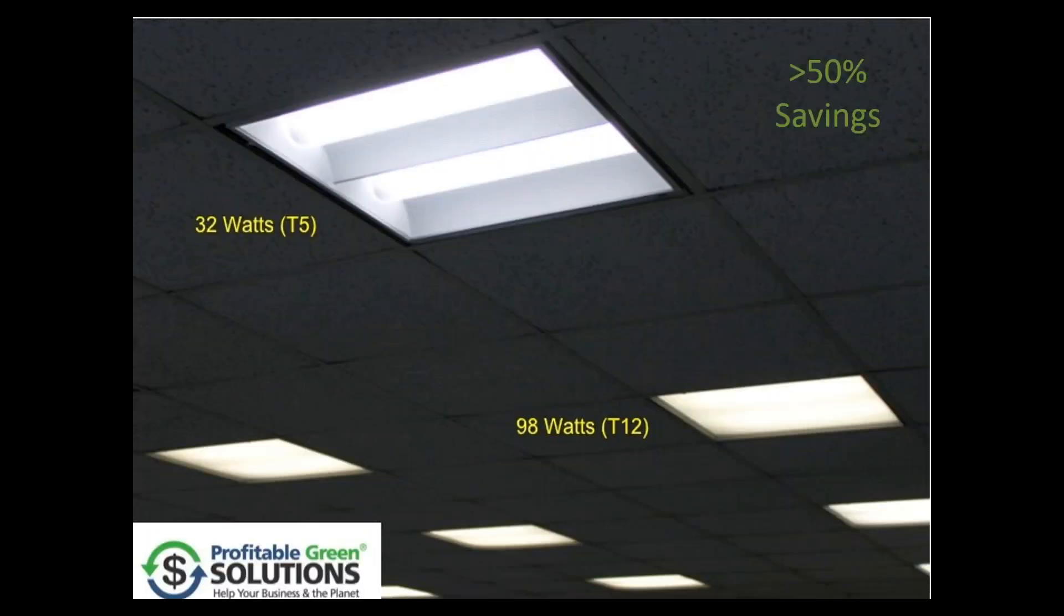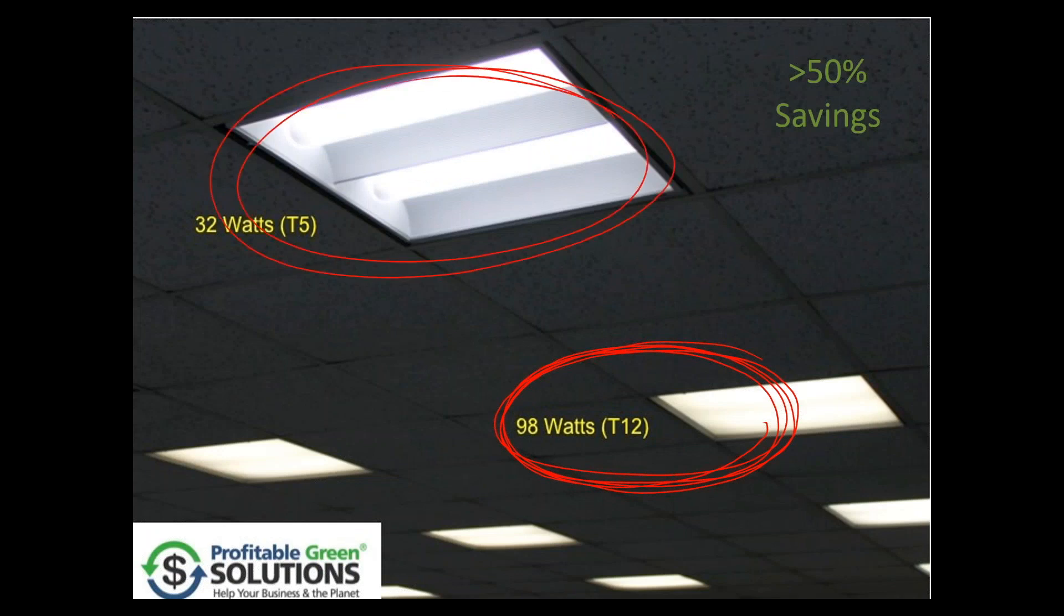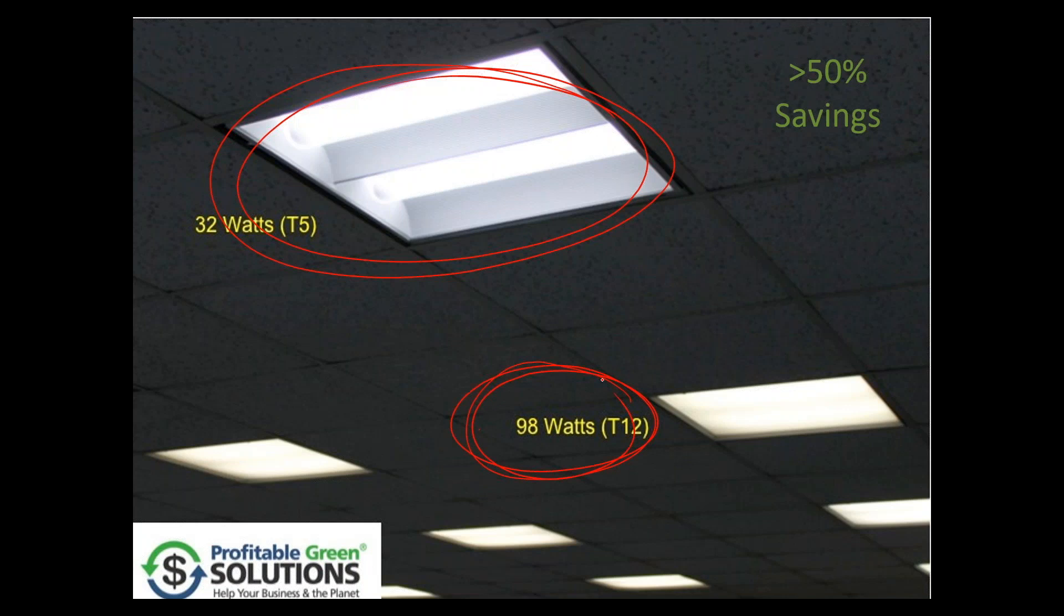Now, here's an example of a retrofit where the existing fixture was a T12, and that's really old, but it could have been a T8. And it was upgraded to a T5 fixture. Today, it could be done to an LED that's shielded. But you can see the difference here, 98 watts to 32 watts. Pretty substantial.